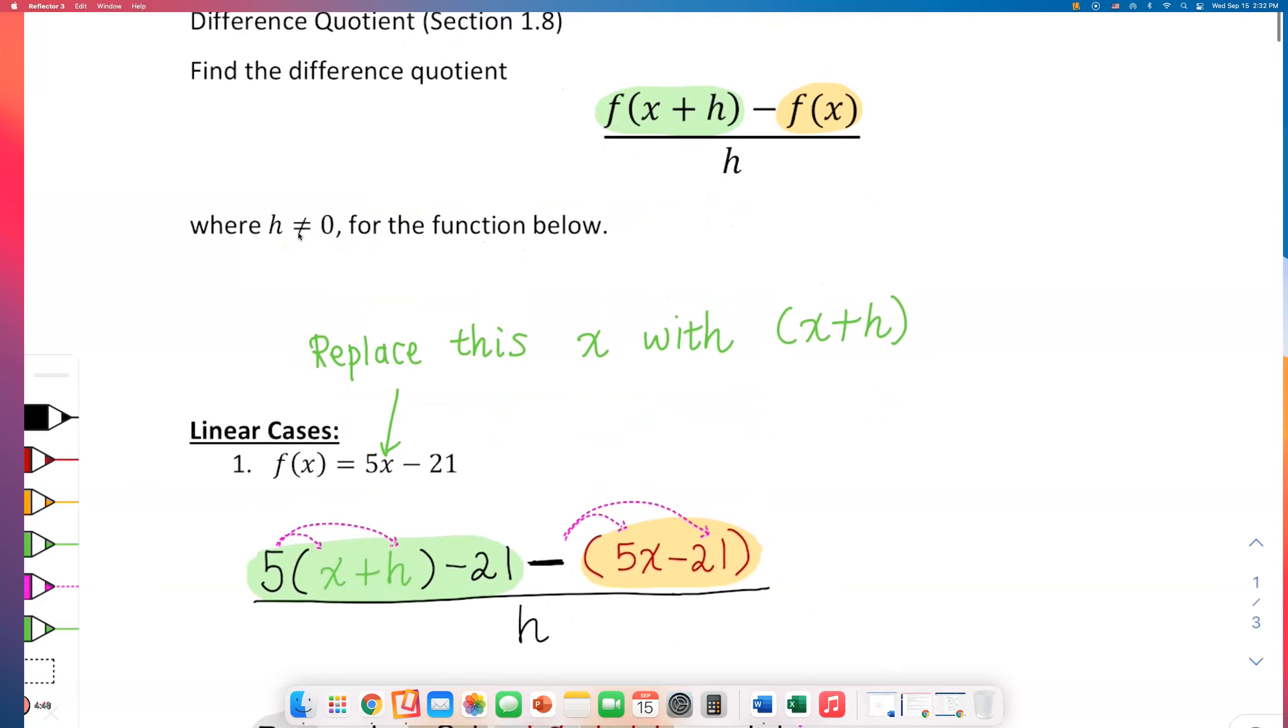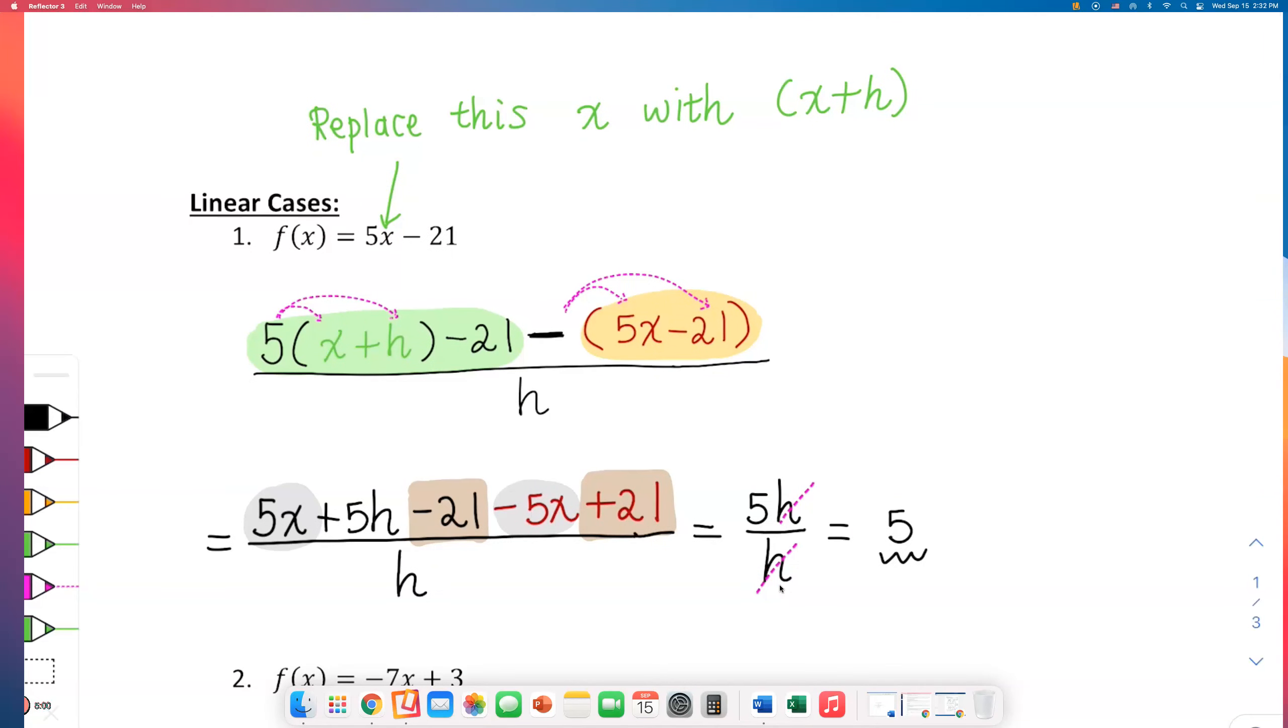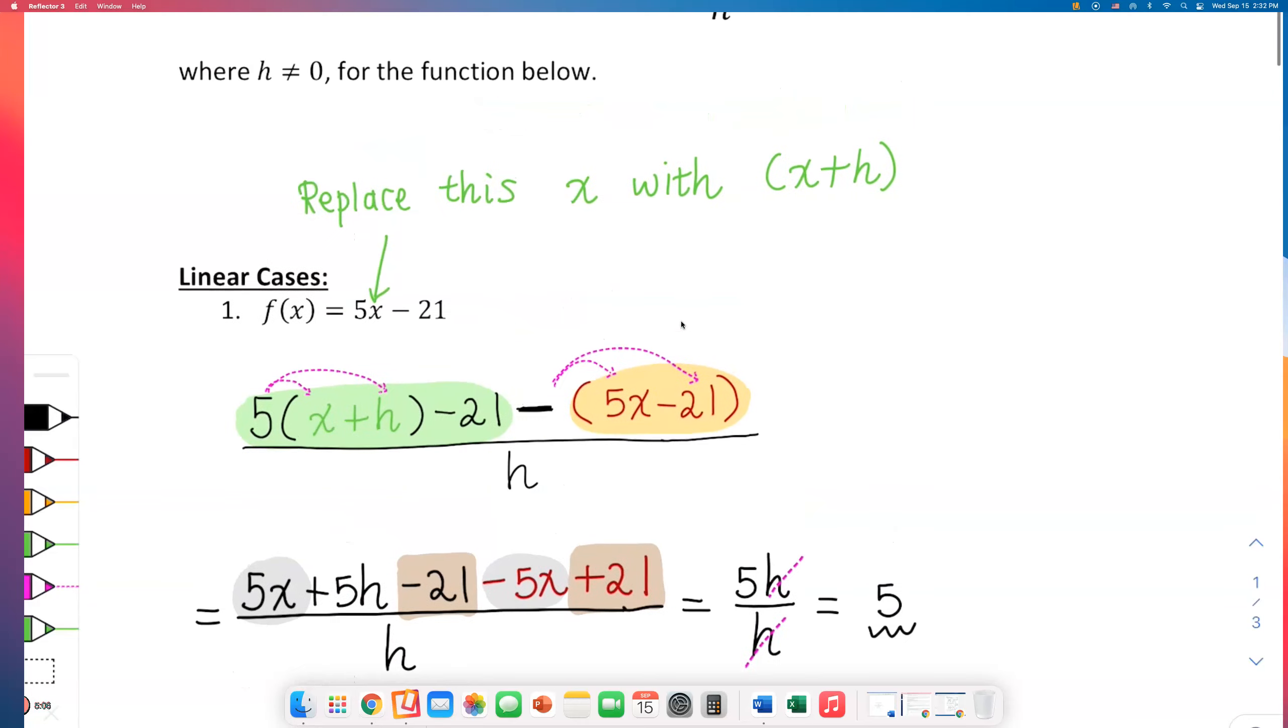I really think the hardest part is setting it up at first - the green part, rewriting it this way and subtracting this f of x, because after setting it up you just have to distribute and combine some like terms.